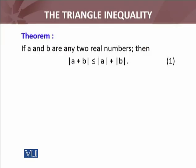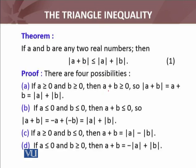If a and b are any two real numbers, then the absolute value of a plus b is always less than or equal to absolute value of a and absolute value of b. It seems okay, but we will formally prove this.